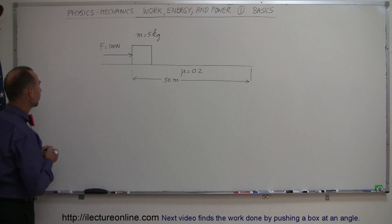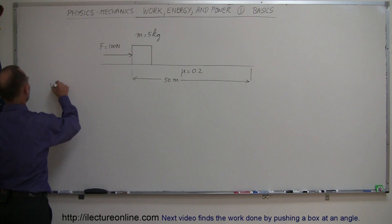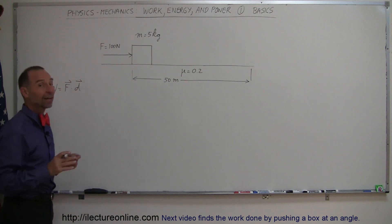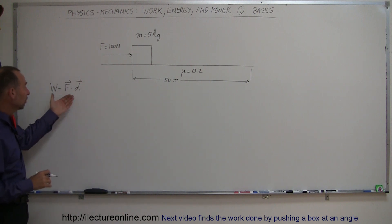So by definition, work performed is equal to force times distance or displacement. And we are talking about vector quantities here. Force is a vector quantity and displacement is a vector quantity. And since we're multiplying together, we're going to do that via a dot product.